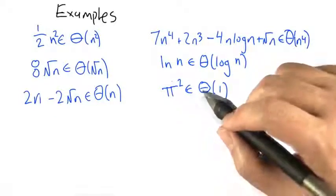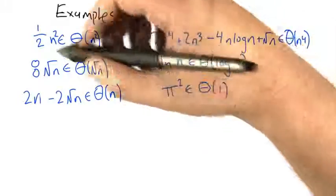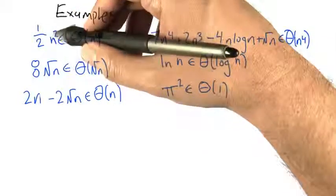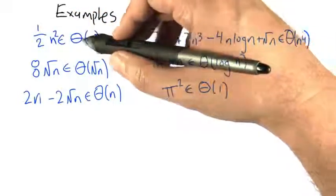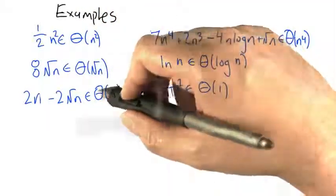What big theta allows us to do is basically write complicated functions in a much simpler way. We can take a function like 1/2 times n squared and just think of it as big theta of n squared. 8 times root n we can think of as just root n, big theta of root n.